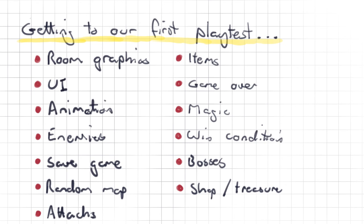Because having all of these small systems interacting with each other — that's really what makes the game interesting. That's why Binding of Isaac is such an awesome game: you have all of these smaller systems working together to give you that really interesting emergent gameplay that everyone likes.